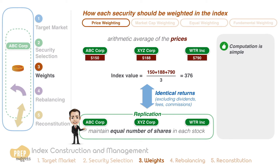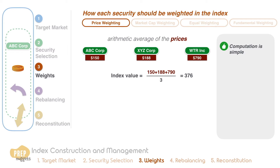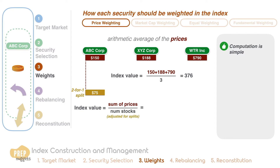Note, however, that certain market actions like stock splits can affect the price of a stock. For example, if ABC stock has a two-for-one split, the price for each share will be adjusted to $75. Most index providers will adjust the denominator of the index such that the index value is unaffected by such changes. We want to maintain the index value at 376 points as before the split, so solving for the denominator, we get 2.8 as the new denominator after the split. From this point on, the index shall use 2.8 as the denominator until another stock split occurs.